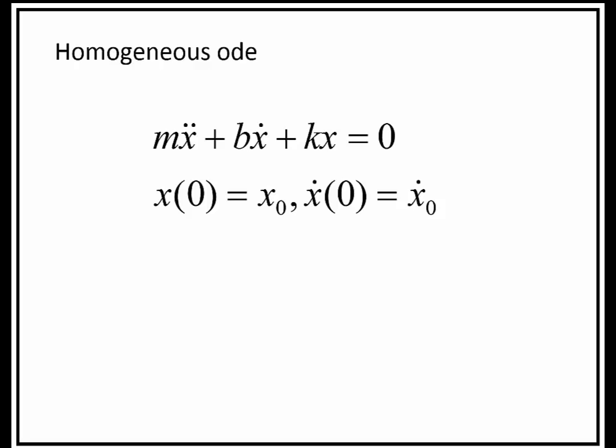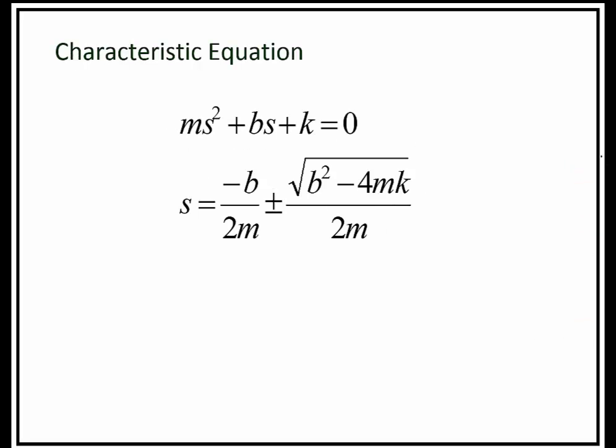The homogeneous portion of the second order differential equation — similar to what you've seen in first order differential equations — is when the right-hand side is equal to zero. We can solve the general homogeneous solution by assuming the solution is an exponential function, plugging it into the original differential equation, and arriving at the so-called characteristic equation: ms squared plus bs plus k.